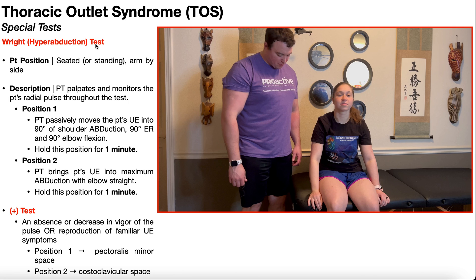To perform the Roos test, the patient is going to be positioned in seated or standing with their arm by their side. In this case, I'm going to be performing the Roos test with the patient in the seated position.